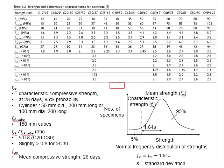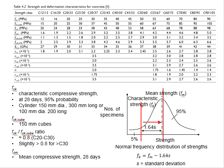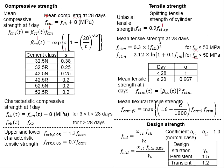Based on the concept of normal distributions, this will be the FCM and this will be the FCK. To determine the FCM, that will be FCK plus 8 MPa, as represented by the formula here.